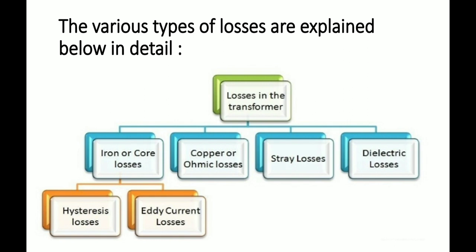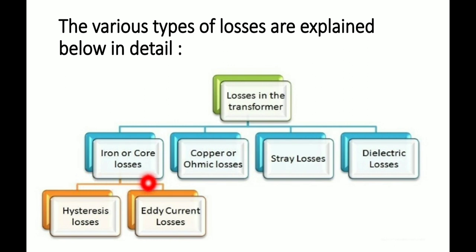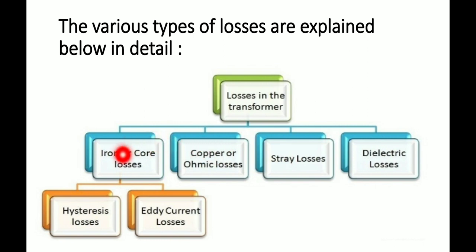Looking at the classification diagram, the losses in a transformer are broadly divided into four types: iron losses and core losses, which are further divided into hysteresis loss and eddy current loss; copper losses and ohmic losses; stray losses; and dielectric losses. The most important are iron losses and copper losses, which we will discuss first.